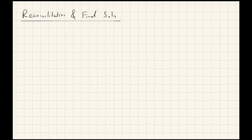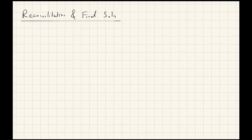Welcome everyone to the final lecture regarding Theodorsen's unsteady aerodynamic model. In this lecture, we will reconciliate the circulatory force to the non-circulatory force, and we're going to come up with the final solution to Theodorsen's unsteady aerodynamic model. Recall that last lecture, we derived the circulatory contribution so that we satisfy the no-penetration boundary condition and have q_θ, which is the velocity tangent to the circle in the circle plane, be 0 at θ equal to 0 to satisfy the Kutta condition.